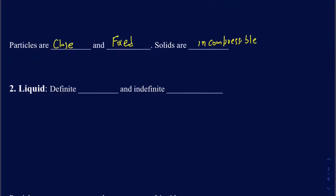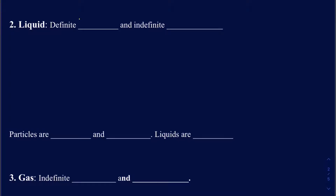On the other hand, when we look at liquids, liquids have a well-defined volume but they don't really have a well-defined shape — another way of saying they have a definite volume but an indefinite shape. For example, if you have half a liter of water in a bottle and you spill it onto the floor, the amount of water is still going to be half a liter. However, the shape will change — it takes the shape of the floor or whatever container you put it into. That's why they have an indefinite shape.